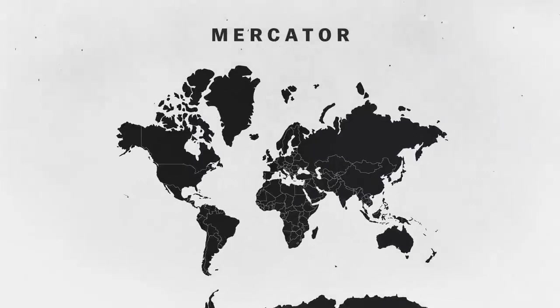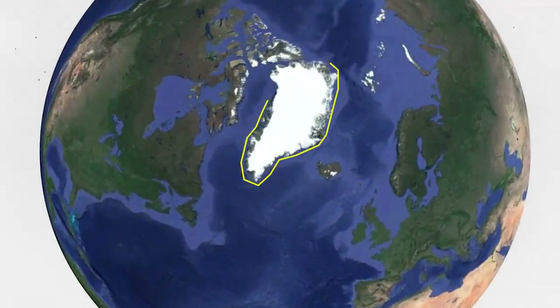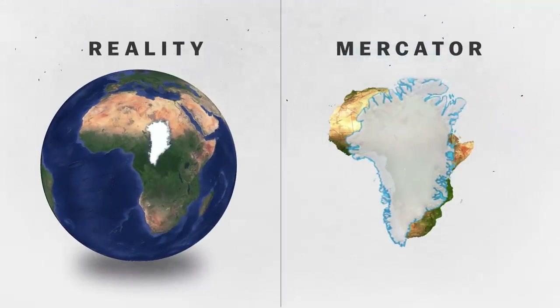But that created some other problems. Where the Mercator fails is its representation of size. Look at the size of Africa as compared to Greenland. On the Mercator map they look about the same size, but if you look at a globe for Greenland's true size you'll see that it's way smaller than Africa — by a factor of 14 in fact.